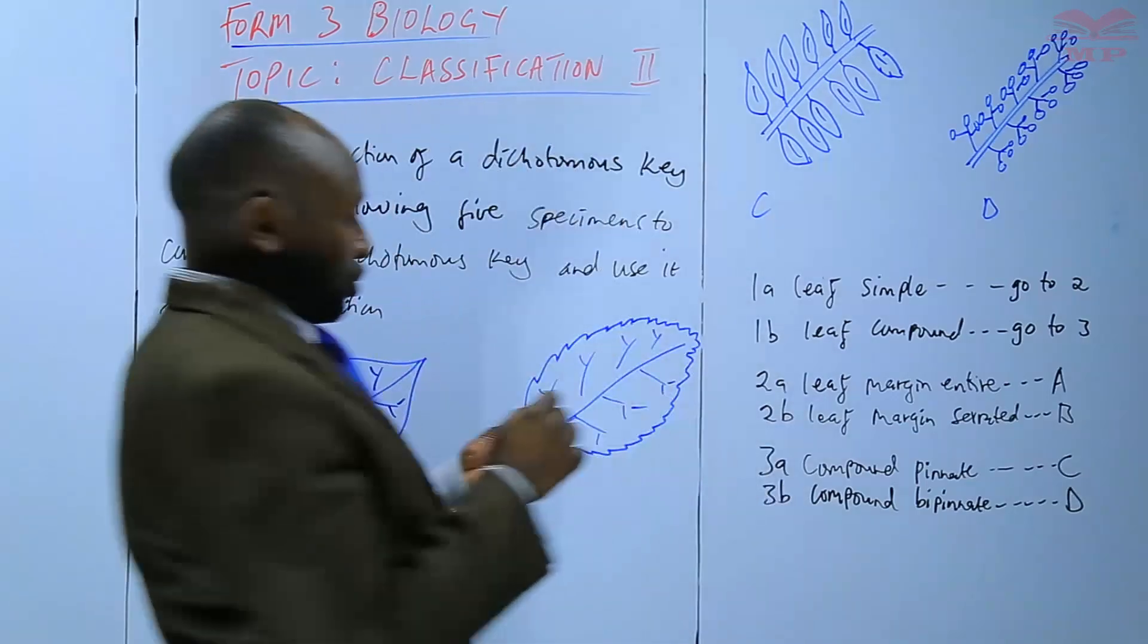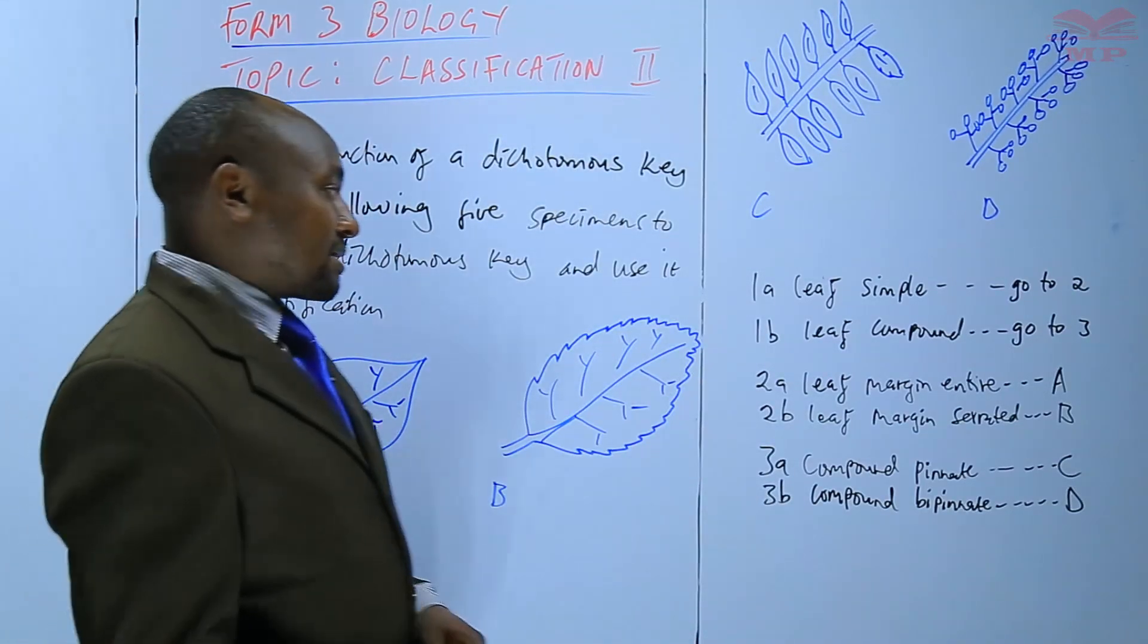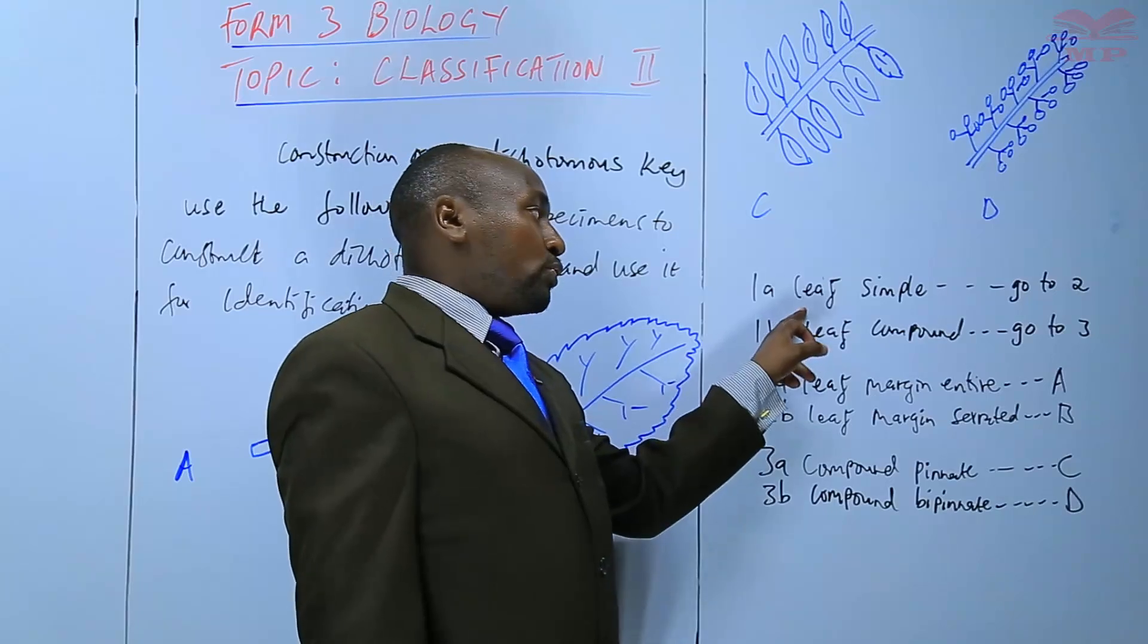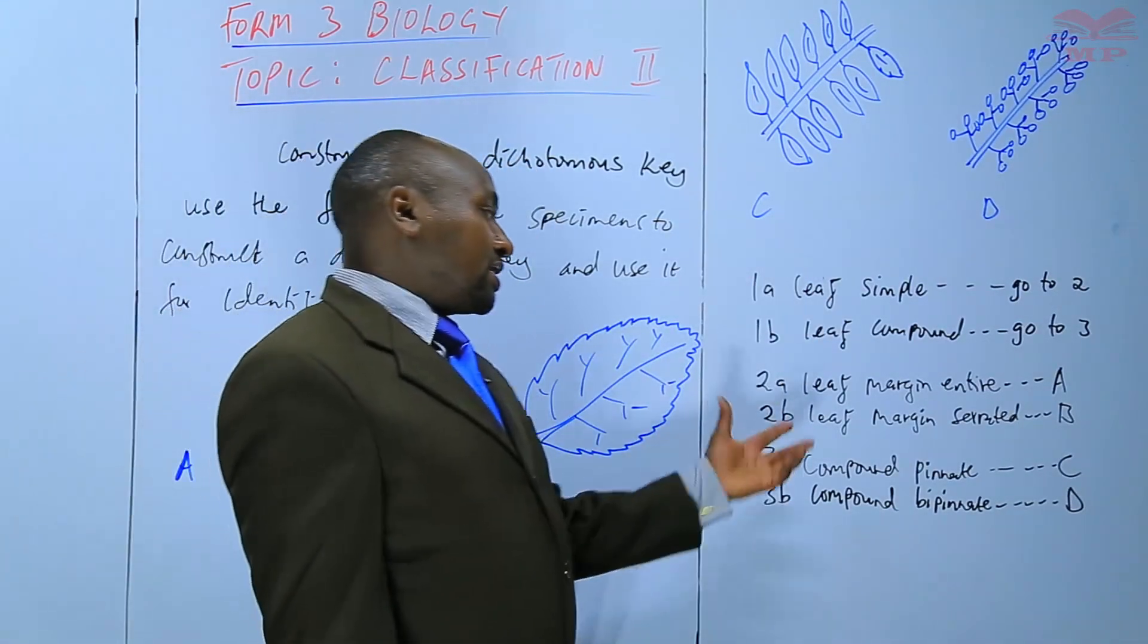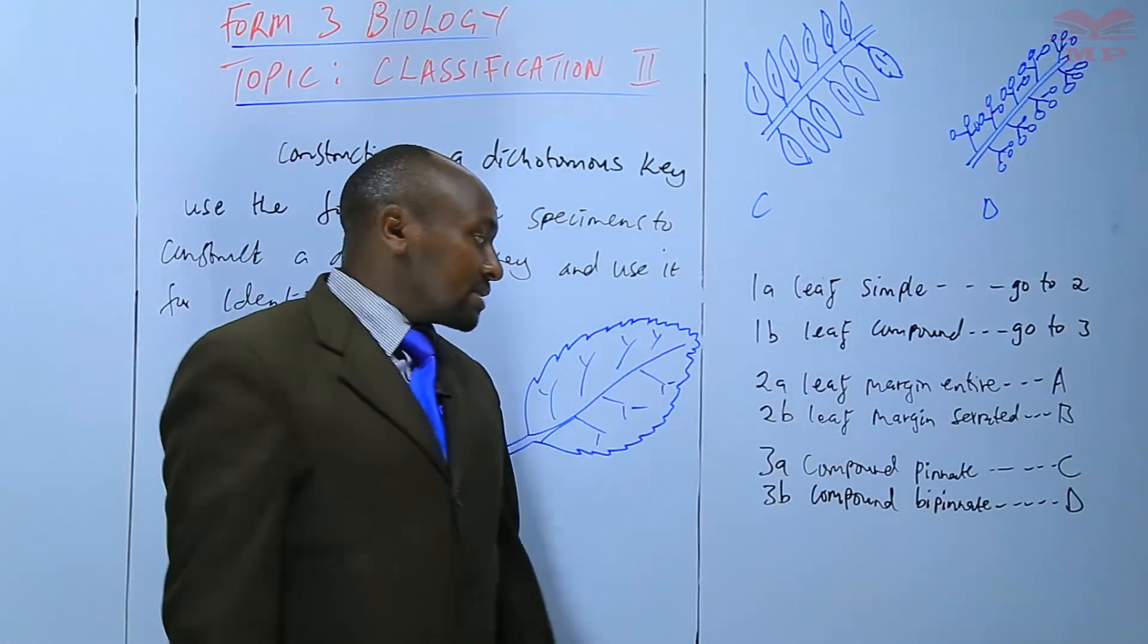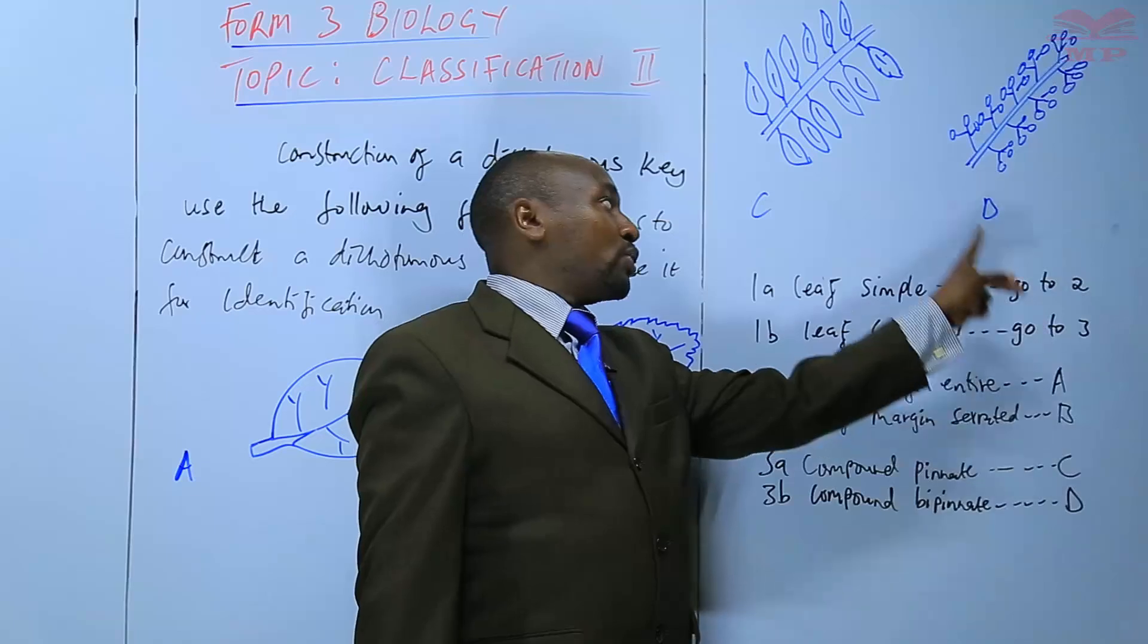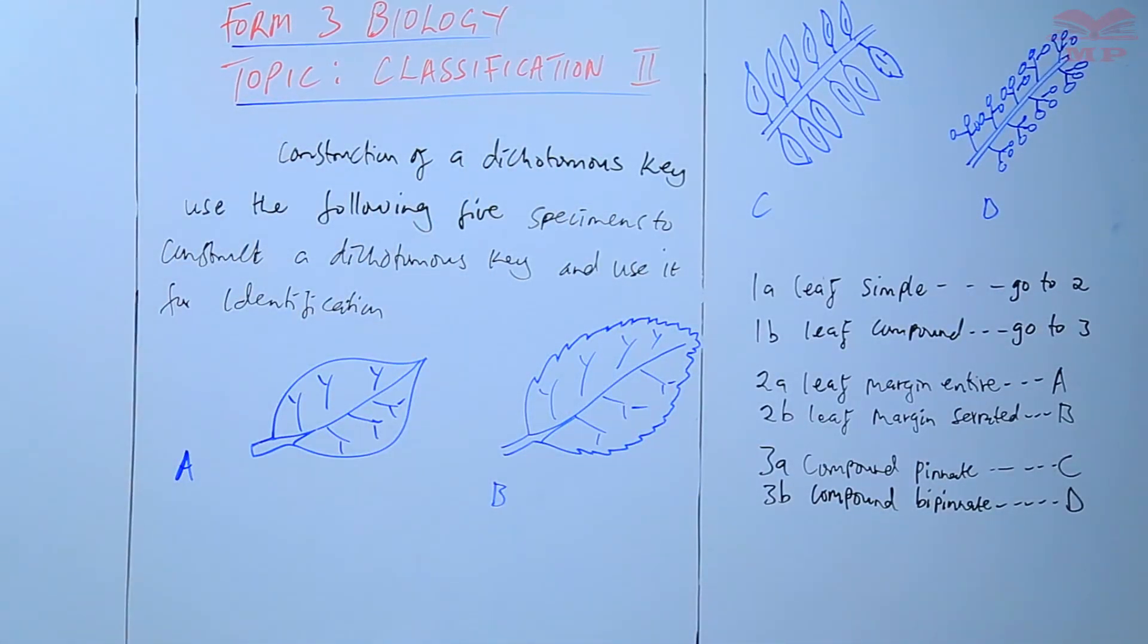We have finished constructing our three-step dichotomous key, starting with the leaf type, which is major, simple, and compound. Then we go to the leaf margin, entire, and serrated. Then we go to the compound leaves, which one is pinnate and which one is bipinnate. After doing that, we can do the identification.